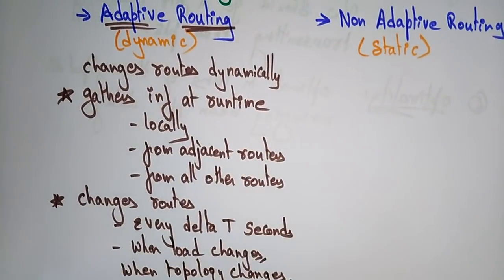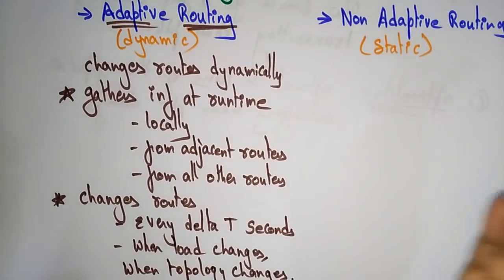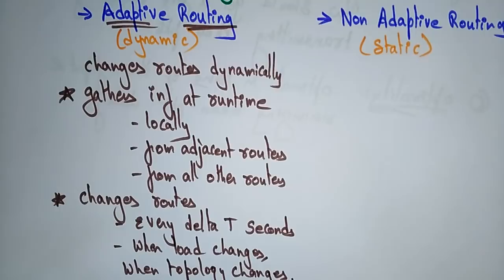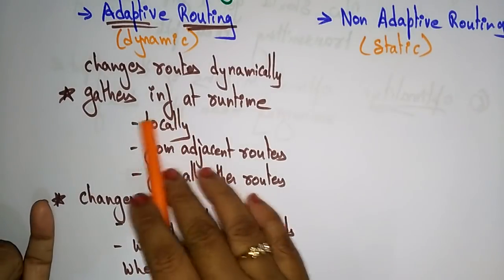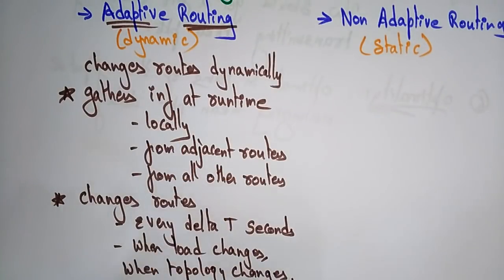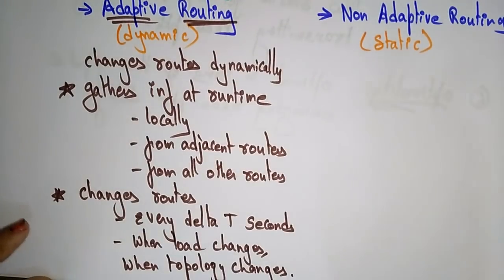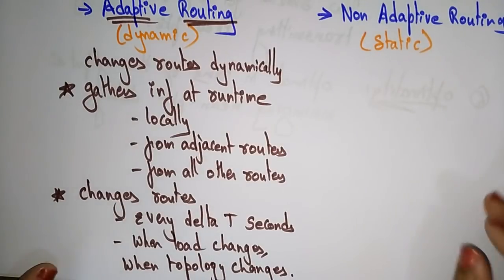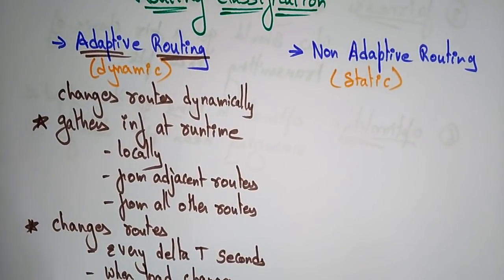So whenever you are asked about routing classifications: routing is of two types — adaptive and non-adaptive. Adaptive routing is called dynamic because it changes routes dynamically. It gathers information at runtime — locally, from adjacent routers, and from all other routers. Routes change when there is a load change from one node to another, when network topology changes, and at every delta-t seconds. That is adaptive routing.